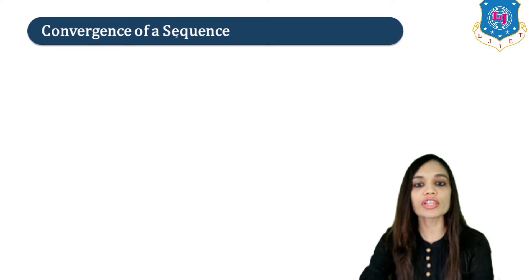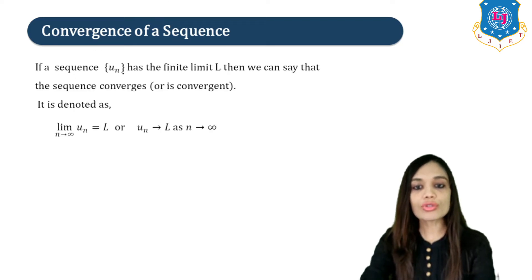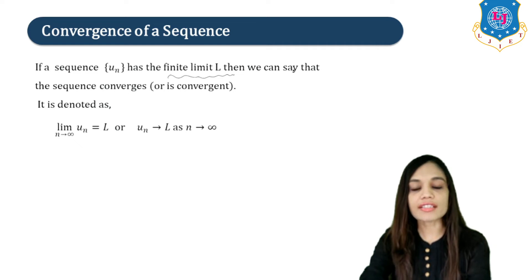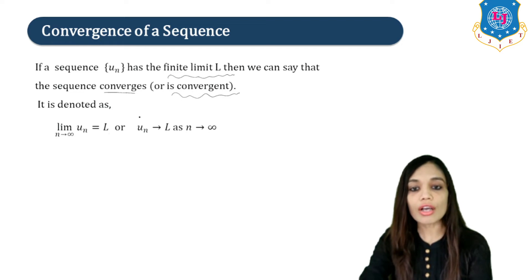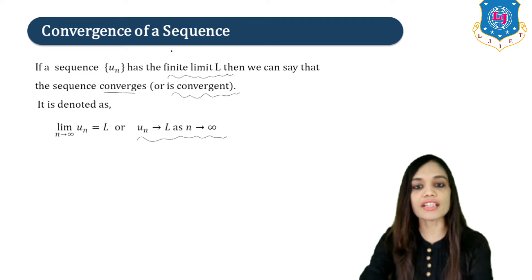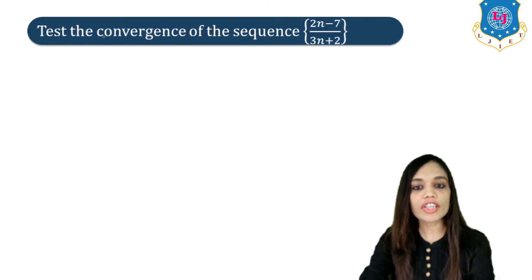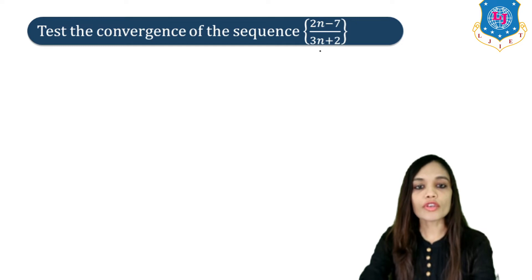Next, let us study the definition of a convergent sequence. If a sequence {UN} has a finite limit L, that is UN → L, then we say the sequence converges or is convergent. It is denoted as lim(N→∞) UN = L, where L is finite. So our UN is equal to (2N−7)/(3N+2) for this example.